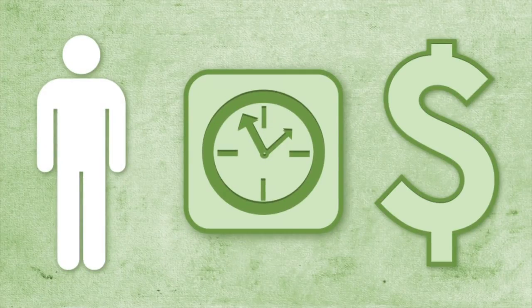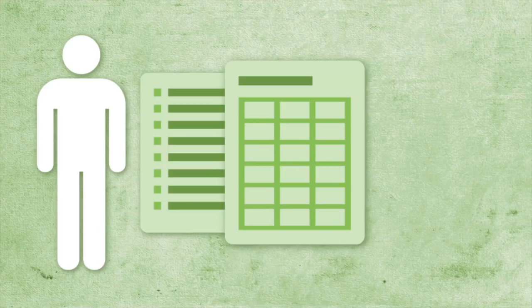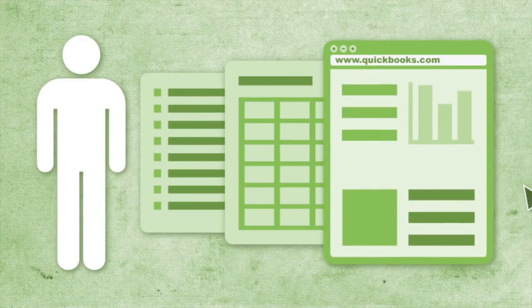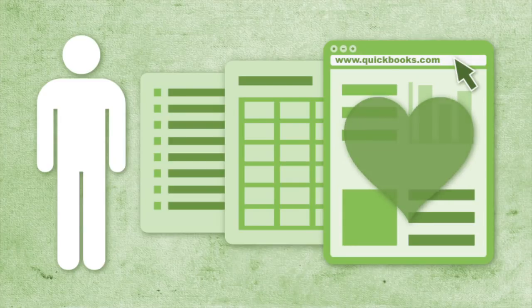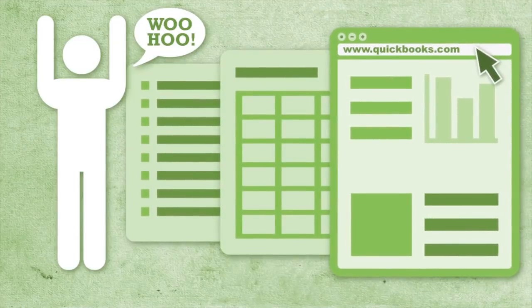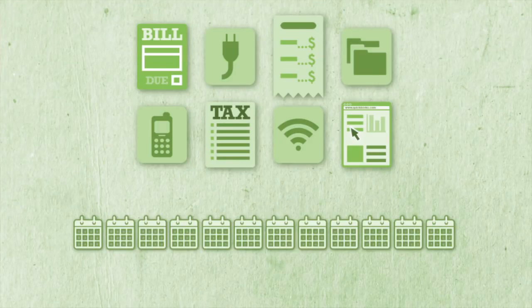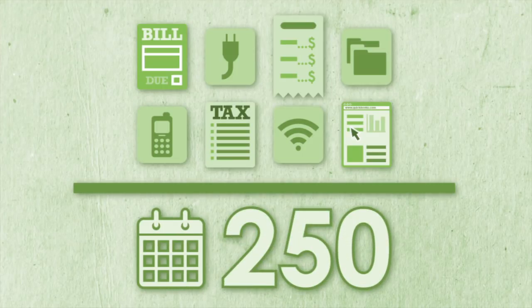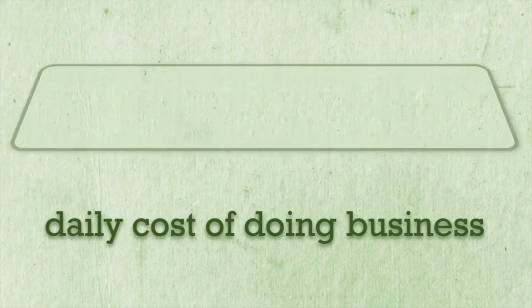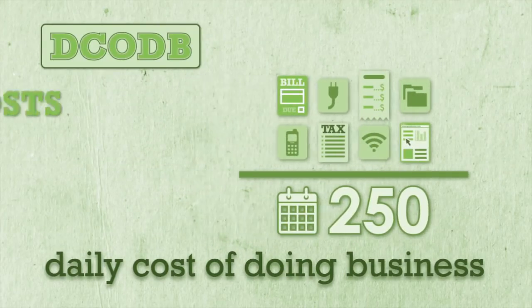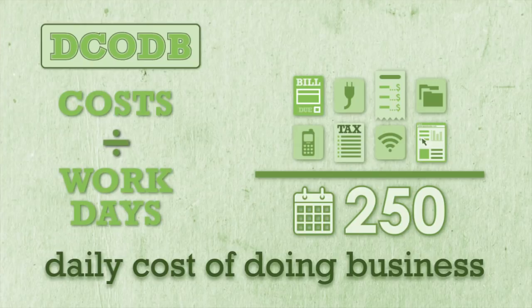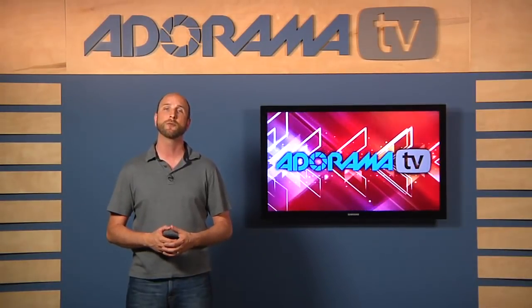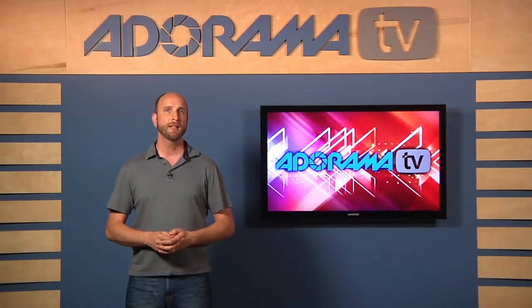Time is your most valuable asset — never forget that. It's a good idea to write down every single cost you have, or use a spreadsheet. You need to calculate your costs on an annual basis. The best way to understand your costs is to track them over time using accounting software. We use QuickBooks Online and absolutely love it. The longer you're in business, the better you'll understand what your costs are. Take all of your costs for an entire year and divide by the number of days you plan to work — usually 250 days per year. This gives you your daily cost of doing business, or DCODB. If you don't know what your DCODB is, you should get cracking on your books.